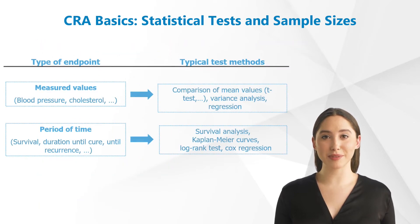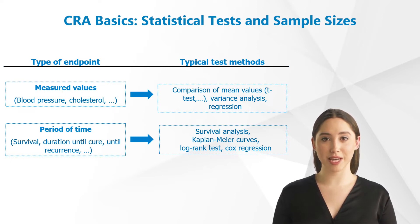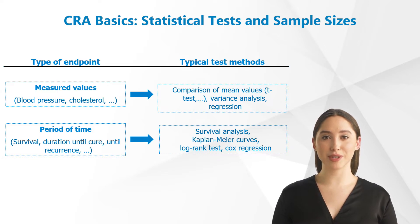Here you can see two examples of types of endpoints in a clinical study. On the one hand, there are measured values, for instance for blood pressure and cholesterol. Typical test methods for such measured values are t-tests, variance analyses, or regressions.